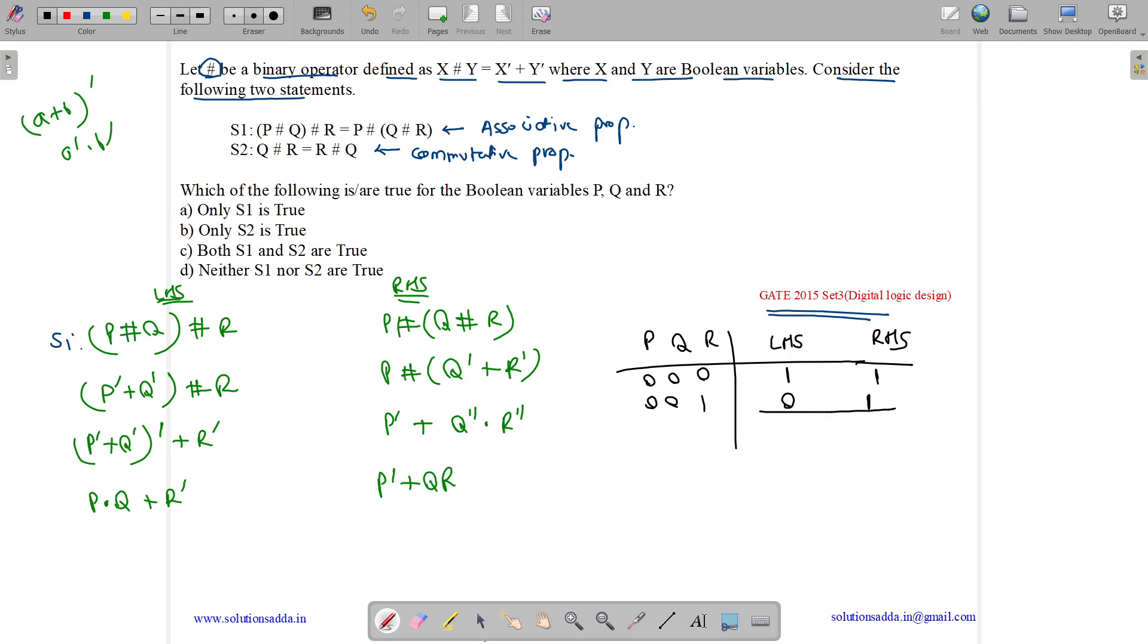So here we can see it is violating the property - LHS is not equal to RHS. These are not equal, so S1 is false.